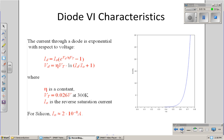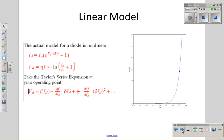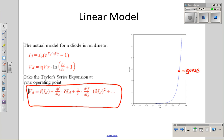Here's the problem: I've got the current and voltage relationship, and I need to come up with a linear approximation. The approach goes as follows. First, estimate the operating point for the diode. Here, I'm going to guess the operating point is 0.7 volts and 14 milliamps. Next, at that point, take the Taylor series expansion.